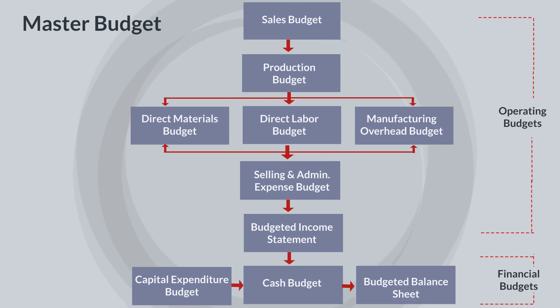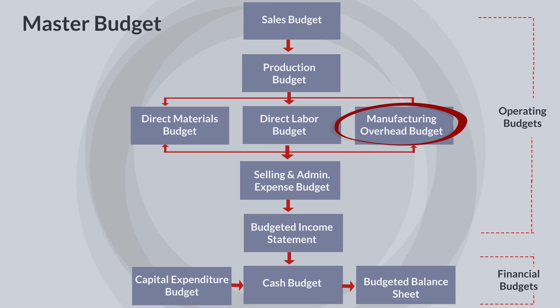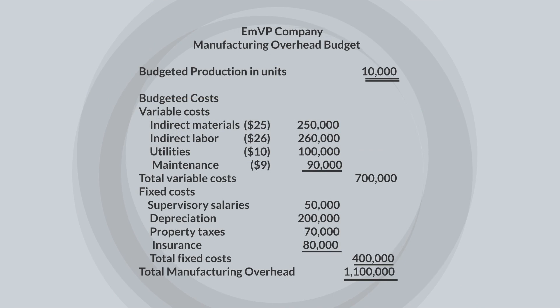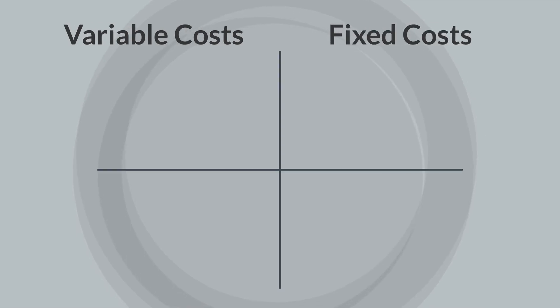To illustrate a static and flexible budget, we'll focus on one of the components in the master budget: the manufacturing overhead budget. This is the manufacturing overhead budget for MVP company, which reports both variable and fixed costs. For planning purposes, a manager must be able to identify costs as either variable or fixed.